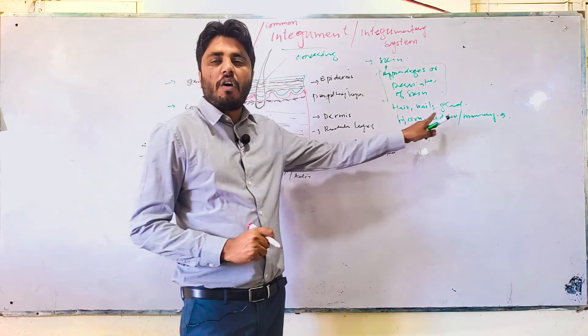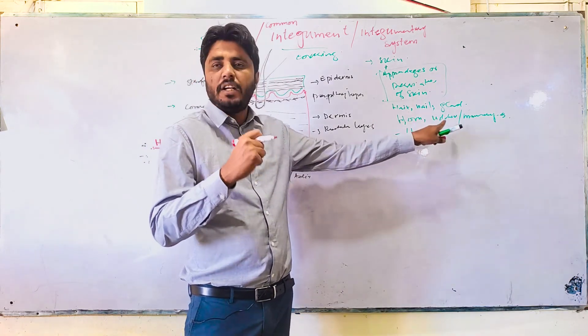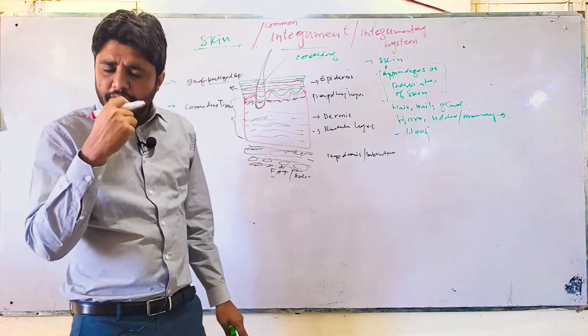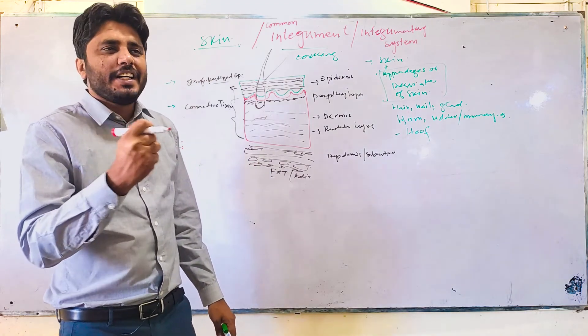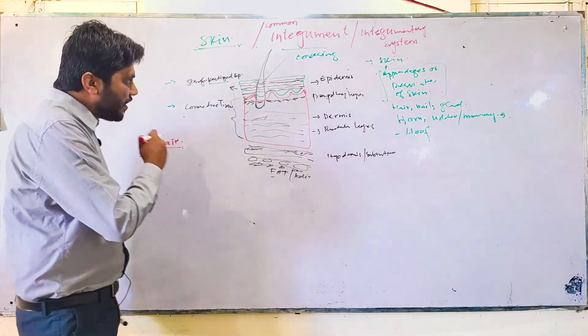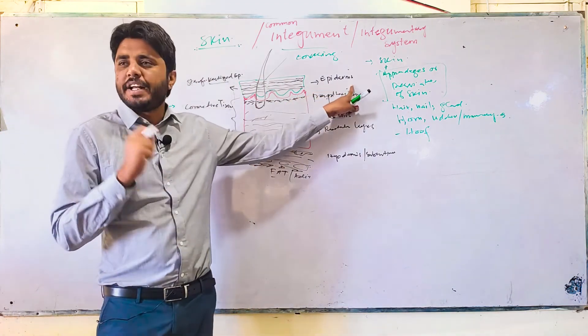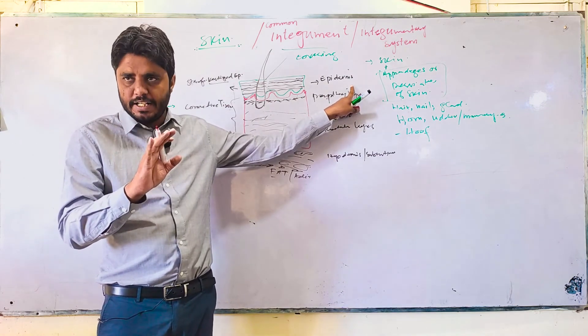The appendages — hooves, horns, claws, hair, nails, and skin glands — are all modifications of the epidermis. This is what you need to understand.